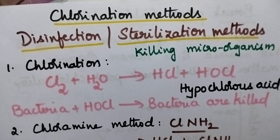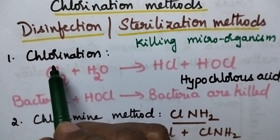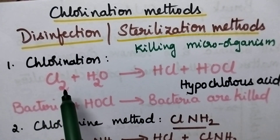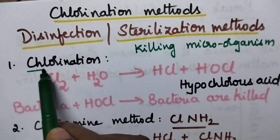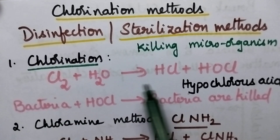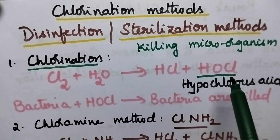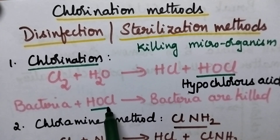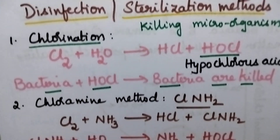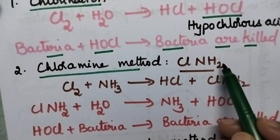Several methods are available for disinfection or sterilization. Initially, let us discuss the chlorination method, where chlorine is the active reagent. Chlorine is added to the water, and it results in the formation of hypochlorous acid, which is the actual disinfecting chemical. This chemical attacks the bacteria and thus the bacteria will be killed.